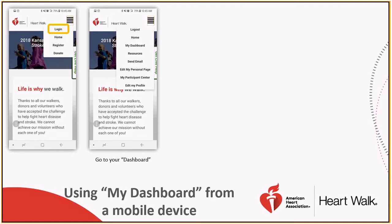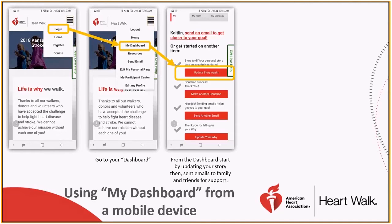Once you have done that, you can click on My Dashboard. From here, you can start your fundraising by updating your personal page with your why. You can use pictures from your phone's gallery, and then also tell your story under the edit story area, just like the desktop version.